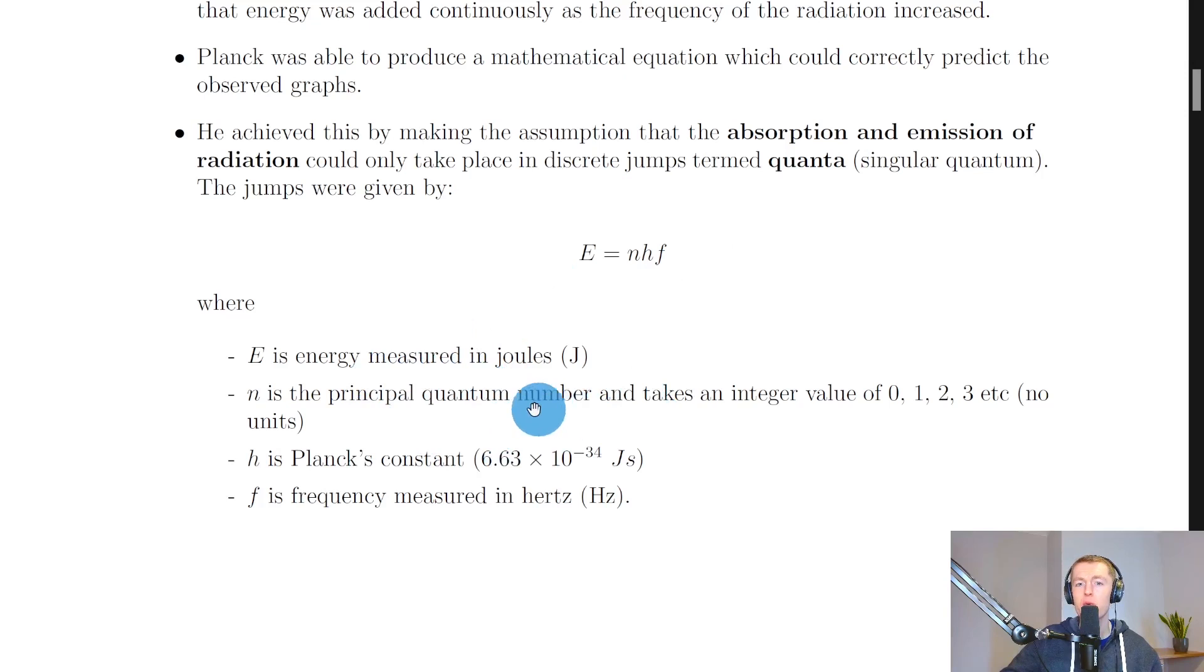Because the principal quantum number is an integer, the energy that is emitted or absorbed will always be a multiple of itself. We could have 0 times hf, 1 times hf, 2 times hf and so on. This gives the idea of quanta or packets or multiples of this energy.